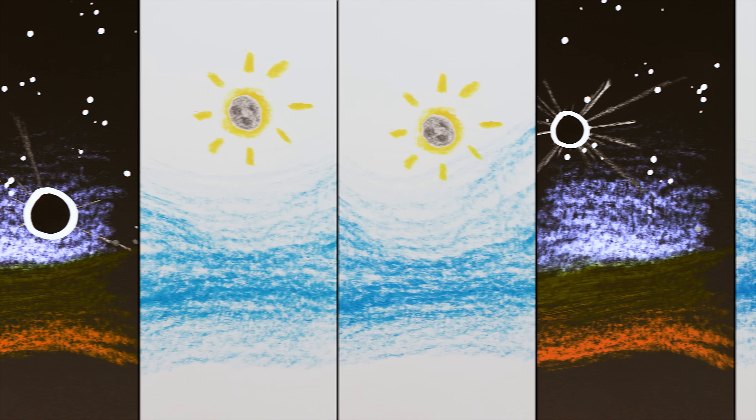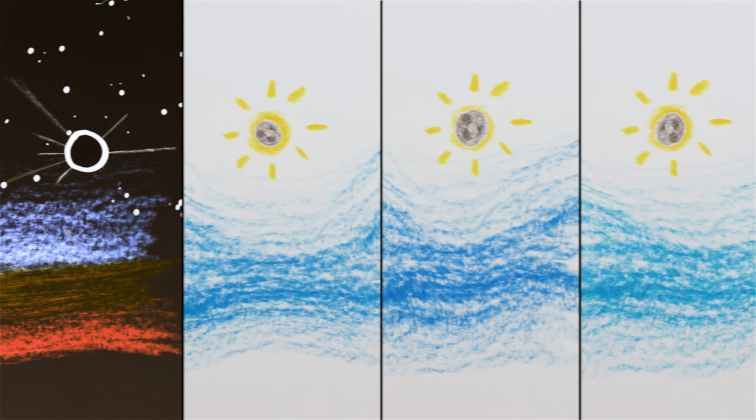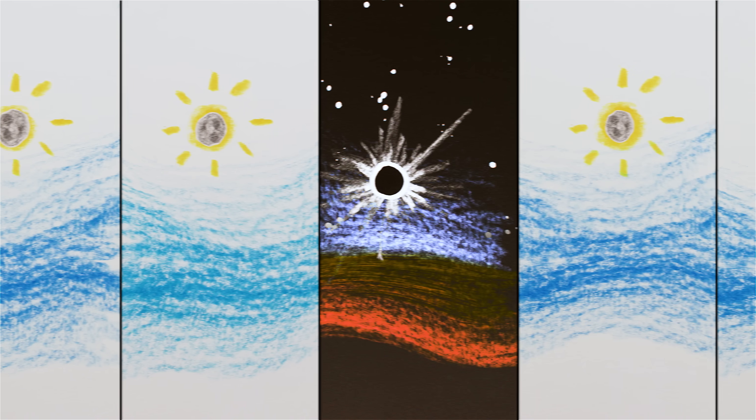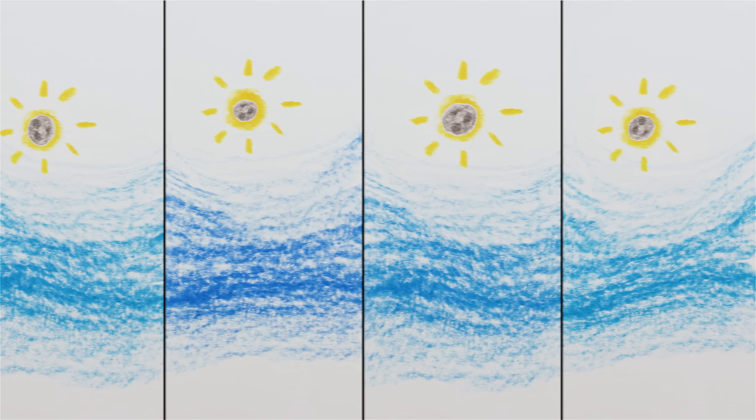Fast forward to today, and there are around 20% more annular eclipses than total eclipses. And as the tides continue to transfer our angular momentum to the moon, the moon will continue to get farther from the Earth, annular eclipses will become more and more common, and total eclipses rarer and rarer.